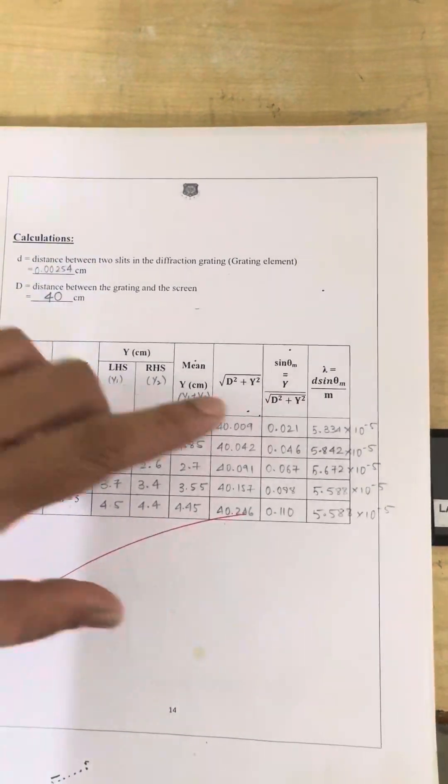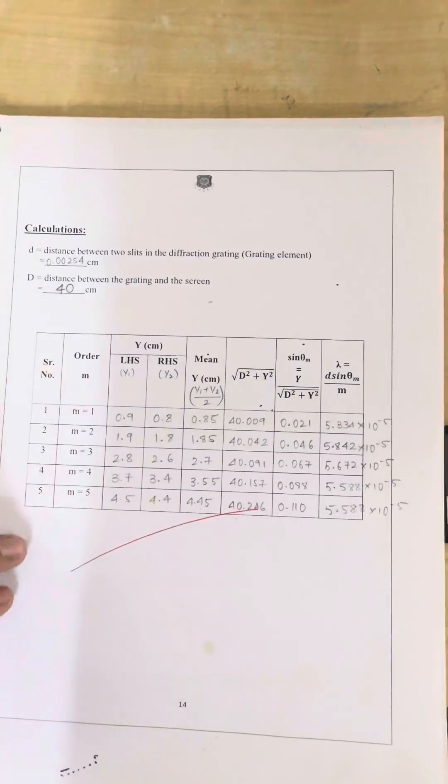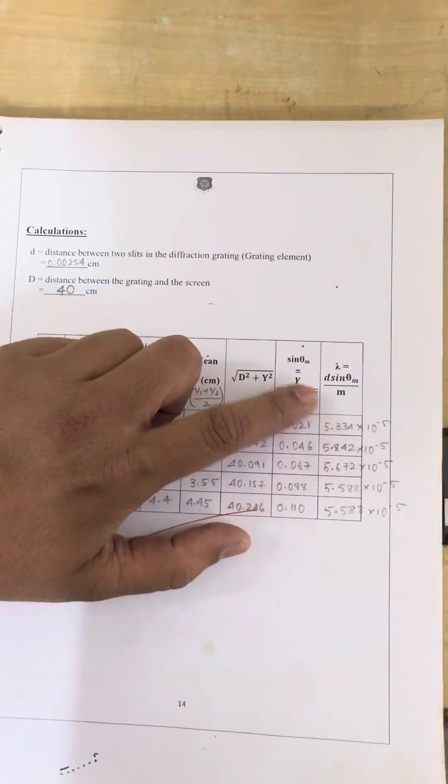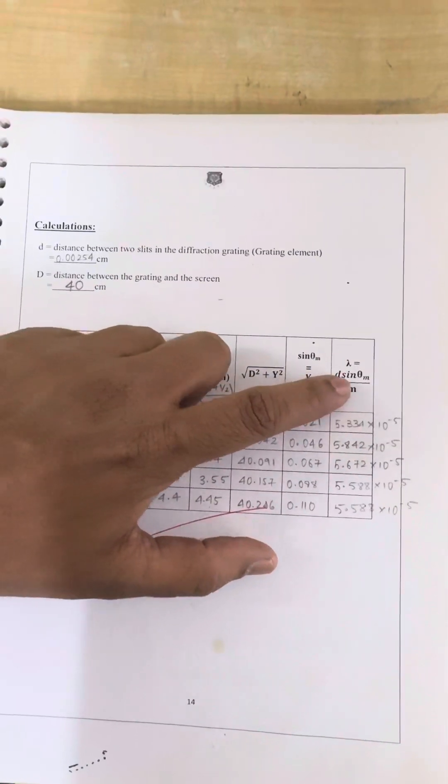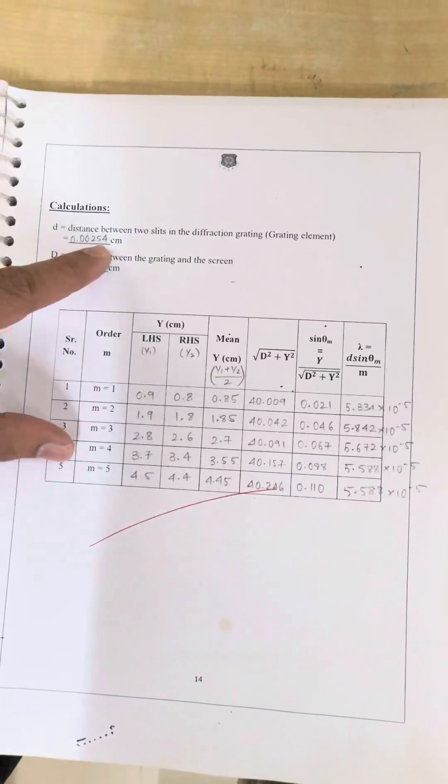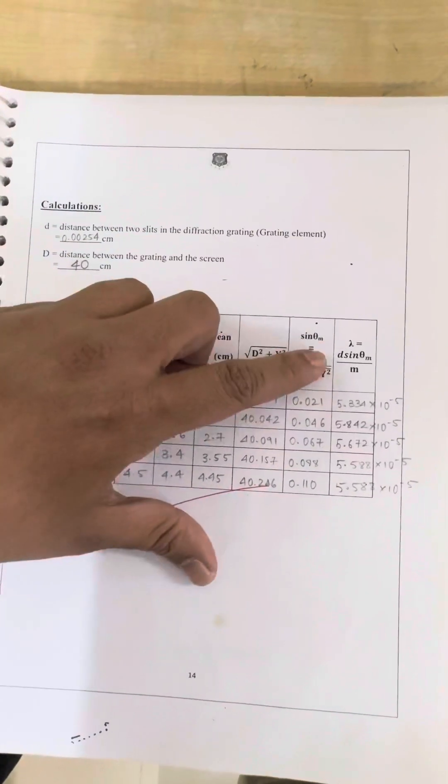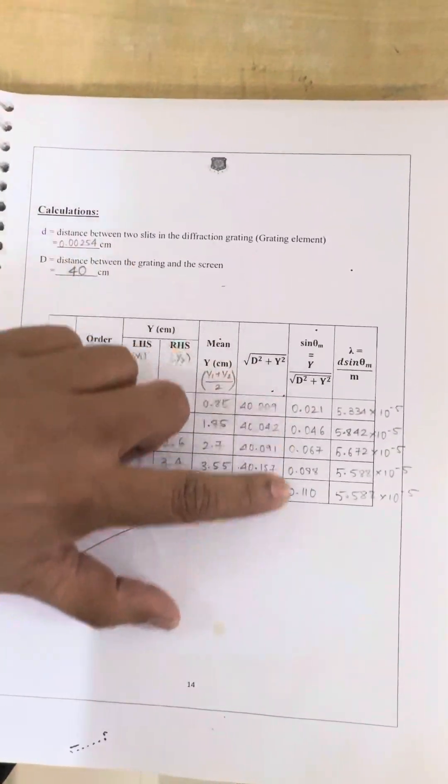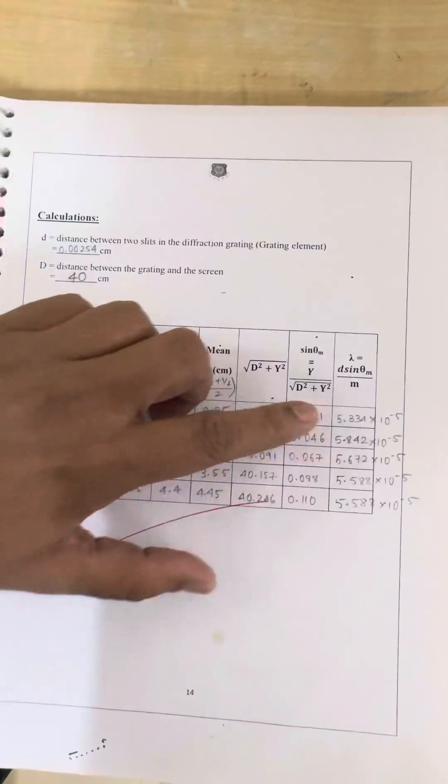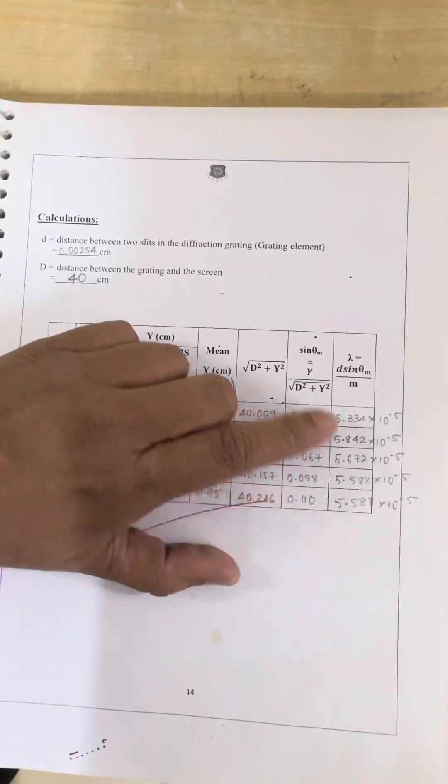n lambda equals d sin theta. Instead of n, we are using m. So m lambda equals d sin theta. So if we make lambda subject, m will be on the right side. So lambda equals d sin theta by m. What is d? d is the distance between two slits which already we have observed. Then sin theta is this. For every case, it is different. m is the order for second, third, fourth. So in this way, you will get the wavelength in centimeter.